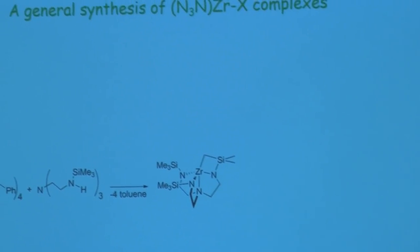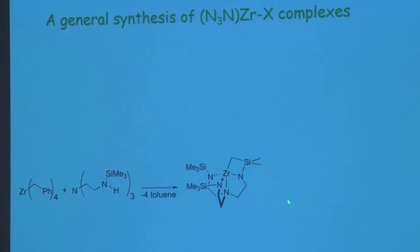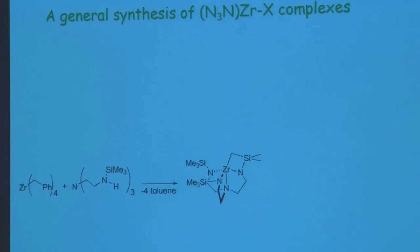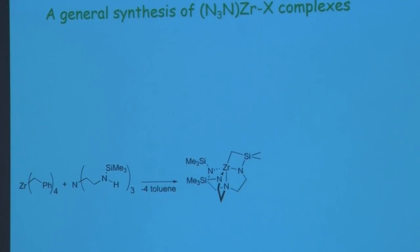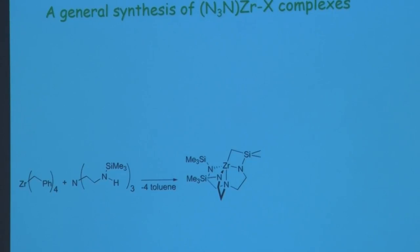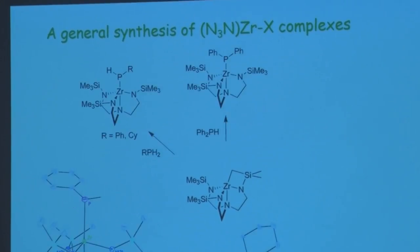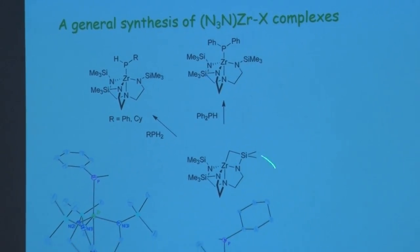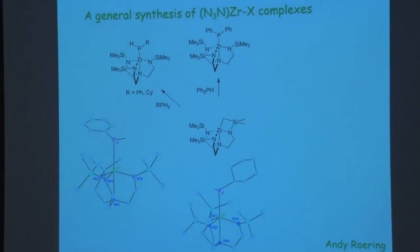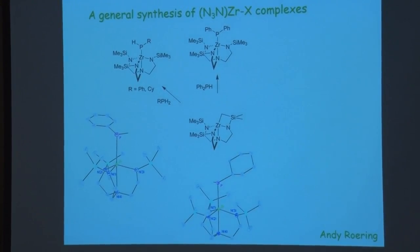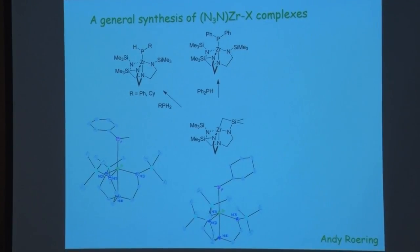We can make this zirconium compound that features a sila-azametallacyclobutane — a four-membered ring that is very reactive. One of the most important things is that you can open it up with any polarized element-hydrogen bond. A good example is phosphorus: primary and secondary phosphines readily open the sila-azametallacyclobutane and form terminal phosphido compounds of zirconium, giving us access to these reactive zirconium-phosphorus chemical bonds. This is the work of former PhD student Andy Rearing.